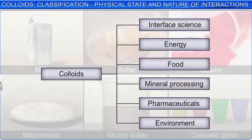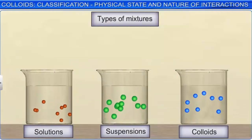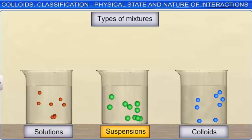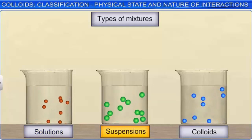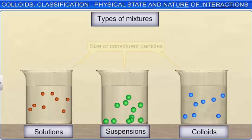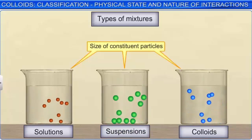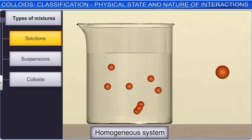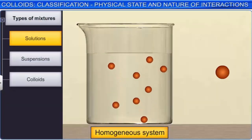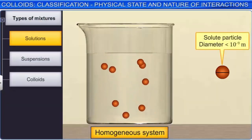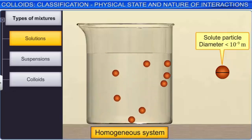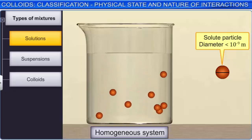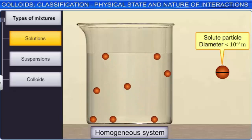Colloids are one of the three major types of mixtures, the other two being solutions and suspensions. The three kinds of mixtures are distinguished by the size of the constituent particles. You already know that solutions are homogeneous systems in which the diameter of the solute is less than 10 to the power minus 9 meters. These particles are not visible to the naked eye. Common salt in water is an example of a true solution.